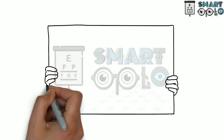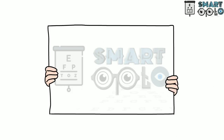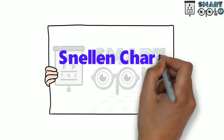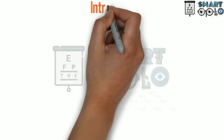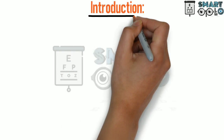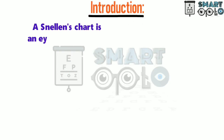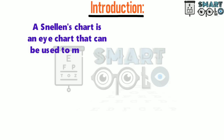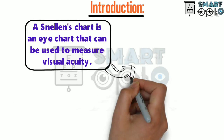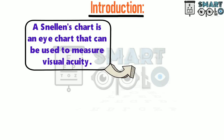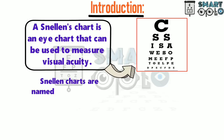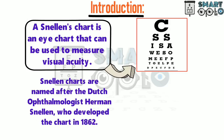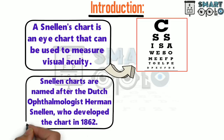Hello viewers. Today in this video I'll explain about Snellen's chart. A Snellen's chart is an eye chart that can be used to measure visual acuity. Snellen's charts are named after Dutch ophthalmologist Herman Snellen, who developed the chart in 1862.